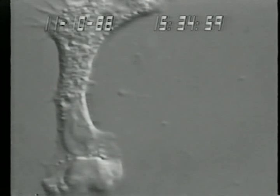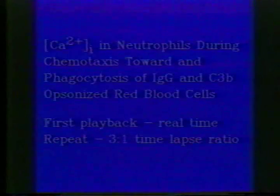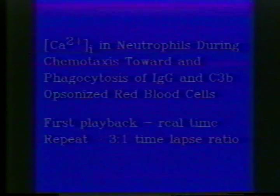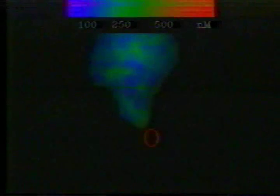To examine whether these transients occurred within localized domains inside the cell during chemotaxis and phagocytosis, we used image processing of Fura-2 loaded cells. At the beginning of each sequence, note the red O which shows the location of the erythrocyte target, since it appears only for a few seconds at the beginning of the sequence. Blue in these images corresponds to low cytosolic free calcium, and red is high. The playback is shown in real time.